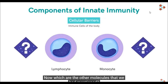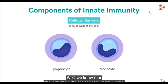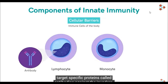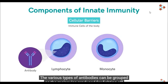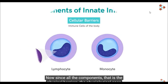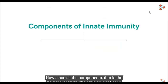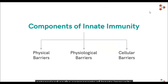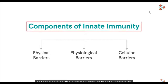The other molecules worth mentioning are the antibodies. The immune cells are capable of producing target-specific proteins, that is antibodies, that mark the invaders. The various types of antibodies can be grouped as the molecules produced for fighting off infections. Since all these components — the physical barriers, the physiological ones, and the immune cells — are present in our body right since birth, they are categorized as the components of innate immunity.